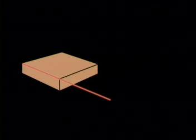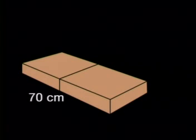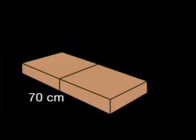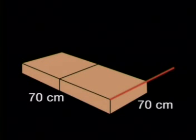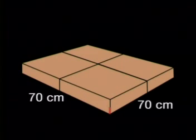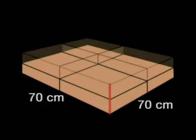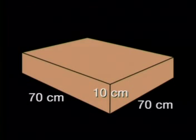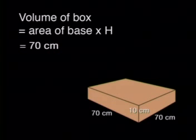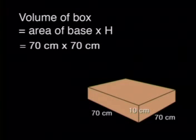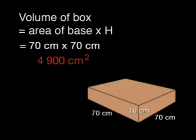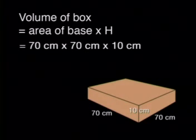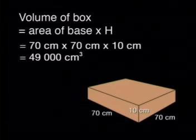Let's put this to the test. This length will be twice 35 centimeters, which is 70 centimeters. This length will also be 70 centimeters, and this height will be twice 5 centimeters, which is 10 centimeters. The area of the base will be 70 centimeters times 70 centimeters, giving us 4,900 centimeters squared. Then we multiply by the height of 10 centimeters, so we get 49,000 centimeters cubed.